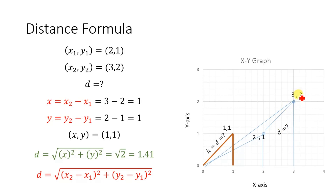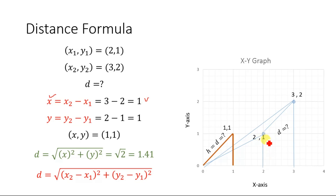We subtract the x component of the smaller triangle from the x component of the bigger triangle, giving us x equals x2 minus x1, which equals 3 minus 2, which equals 1. Similarly, we subtract the y component of the smaller triangle from the y component of the bigger triangle, giving us y equals y2 minus y1, which equals 2 minus 1, which equals 1.